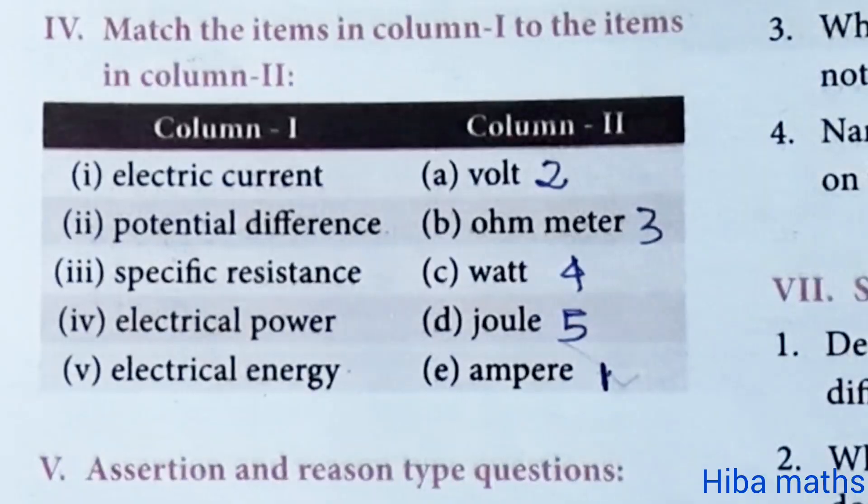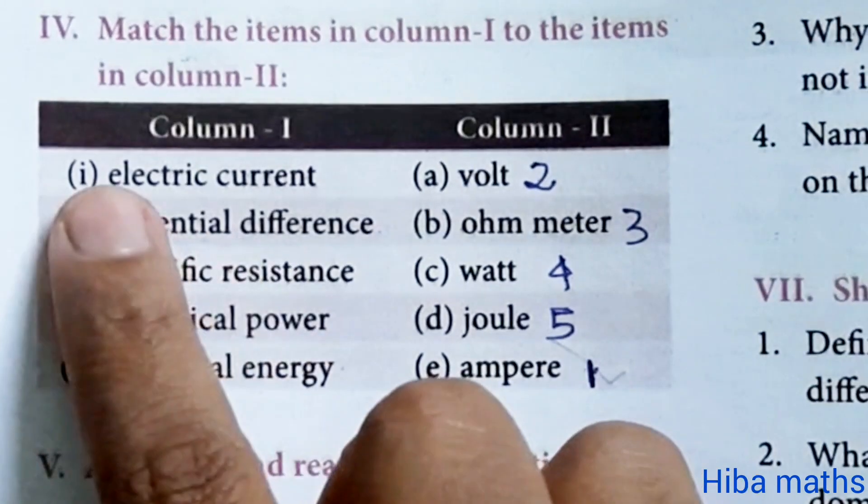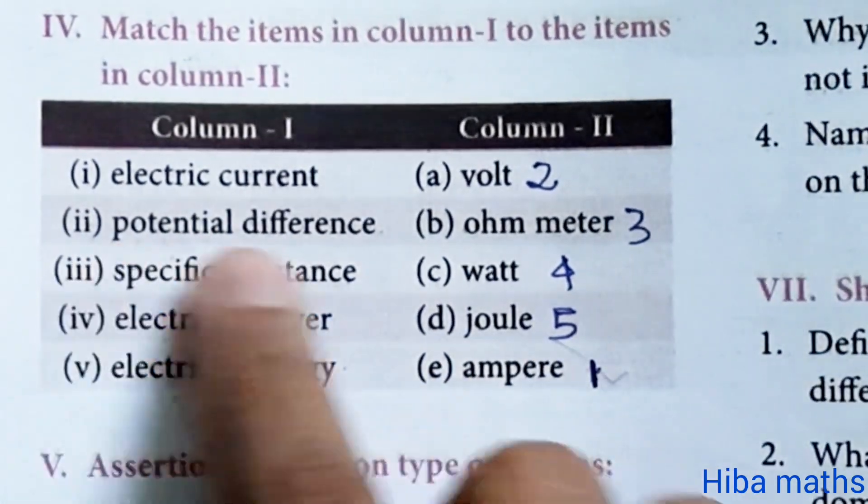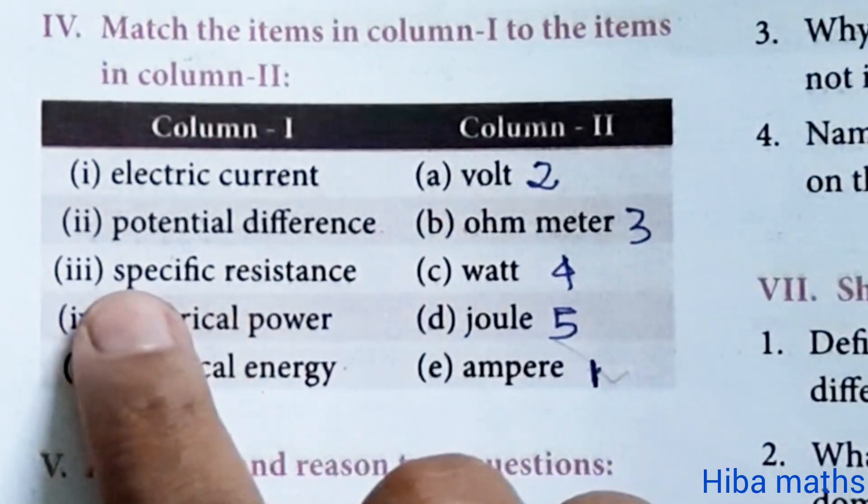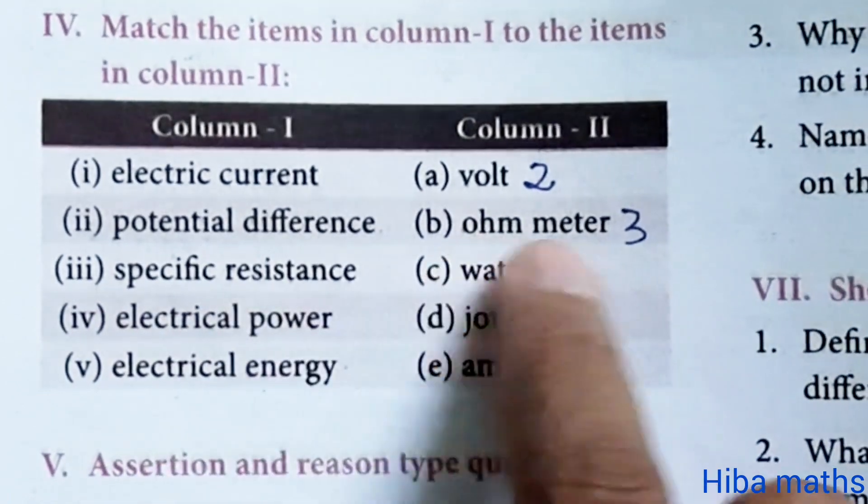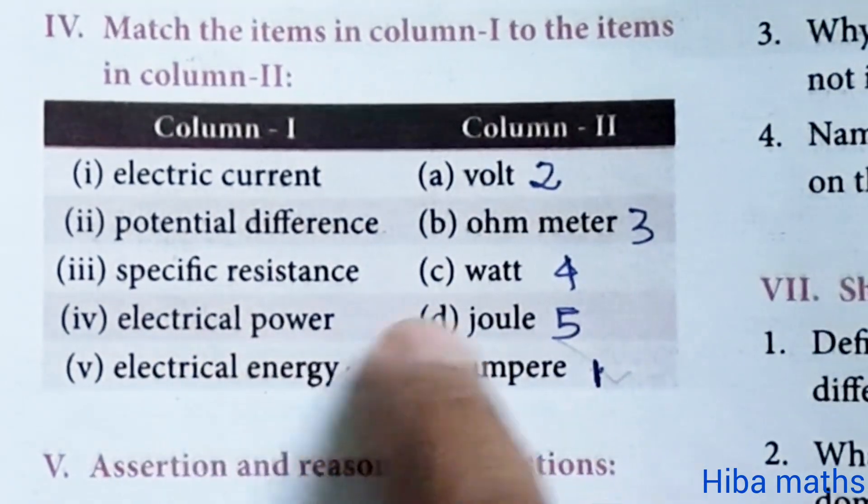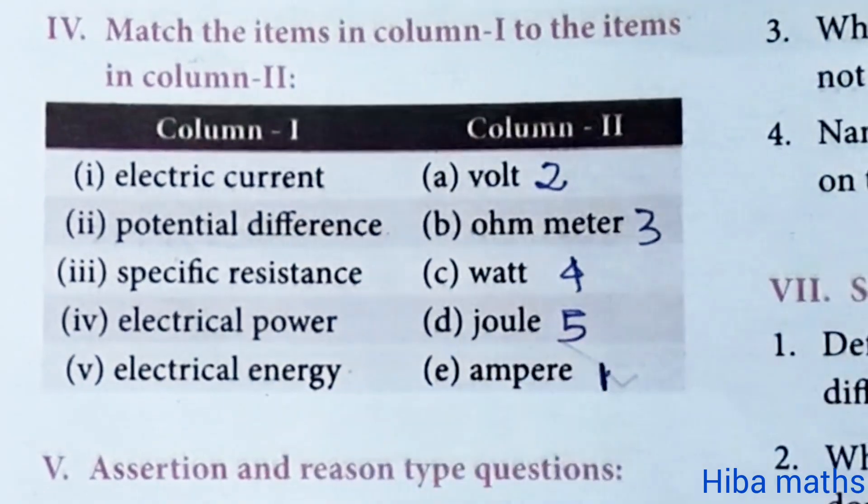Match the following: Electrical current - ampere. Potential difference - volt. Specific resistance - ohm meter. Electrical power - watt. Electrical energy - joule.